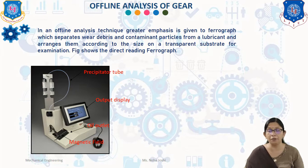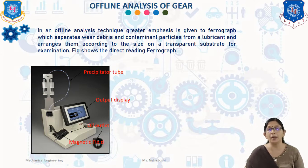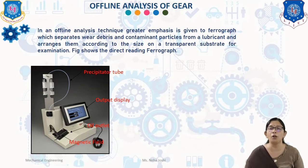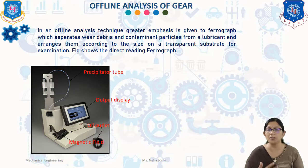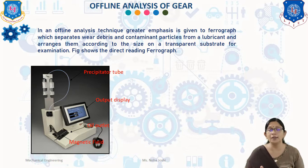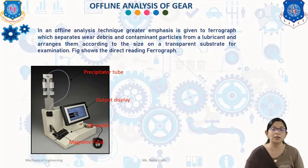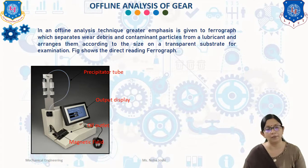In the direct reading ferrograph, a magnetic field is used to separate ferrous particles. At the starting point of the magnetic field, particles of 5 micrometers or greater are collected, and towards the end of the magnetic field, 1 to 2 micrometer particles are collected. The densities of particles are found by sending monochromatic light through the bottom of the glass precipitate tube, and the amount of light cut off by particle buildup is read by sensors, which are converted into dL and dS readings. The performance of the lubricant is assessed based on three indices: wear rate index (dL + dS), wear intensity index (dL − dS), and wear sensitivity index Si = dL × (dL − dS) / dS.